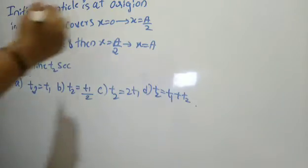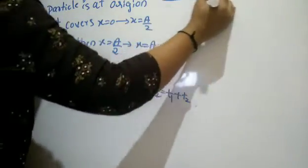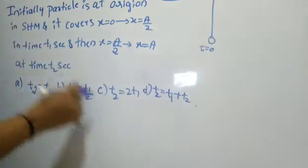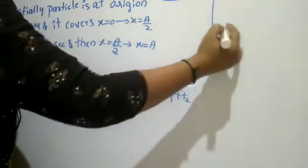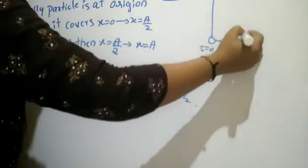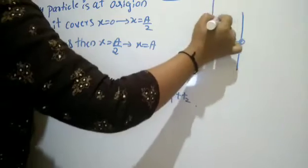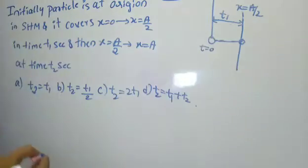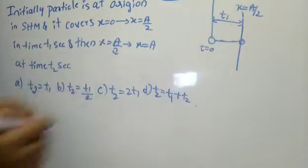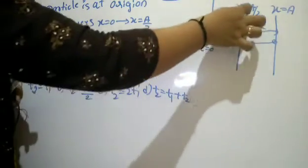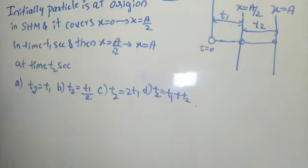It is a very important point — we need to draw the diagram first. The mean position is at x=0 at t=0. It covers x=0 to x=a/2 in time t1 seconds. Then from a/2 to a — which is the extreme position — it takes t2 seconds. So we need to find out the relation between them.